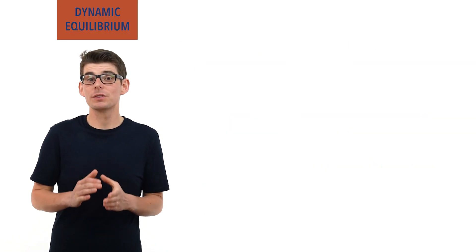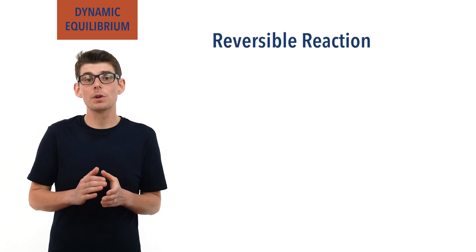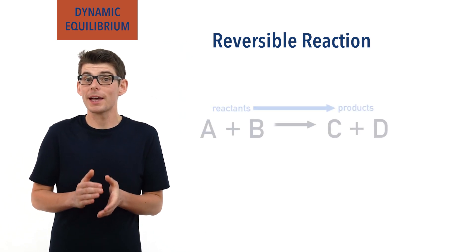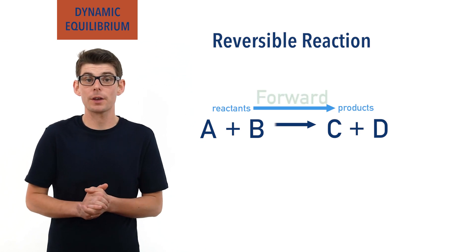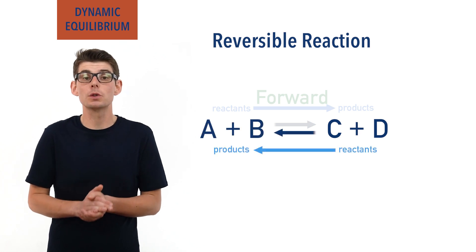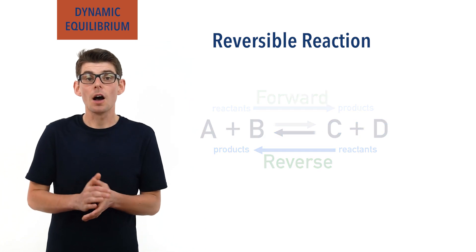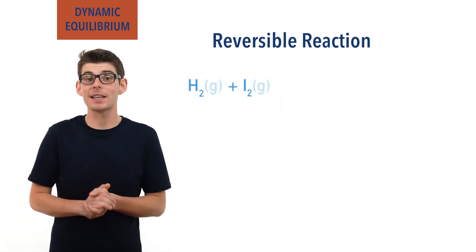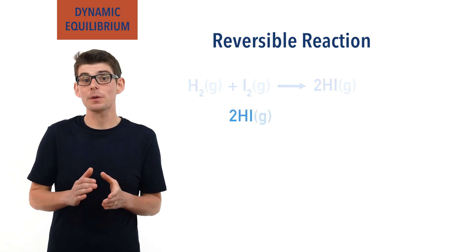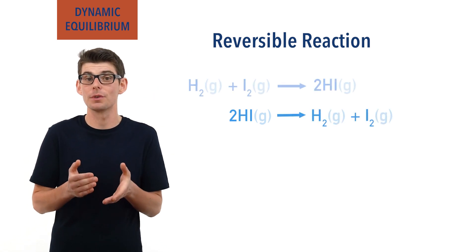Many reactions and processes in chemistry are reversible. A reversible reaction is one in which the reaction can proceed in both directions. Reactants can react to form products in what is called the forward reaction, and these products can also react to form the reactants in what is called the backwards or reverse reaction. For example, hydrogen and iodine gas can be reacted together to form hydrogen iodide. Hydrogen iodide, the product, is also able to react of itself and form hydrogen and iodine. This means the reaction is reversible.